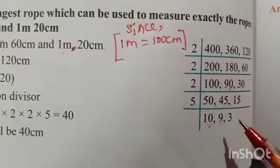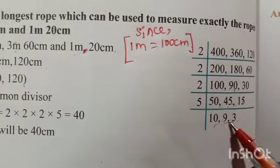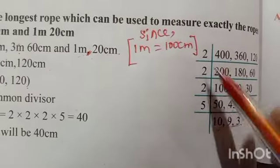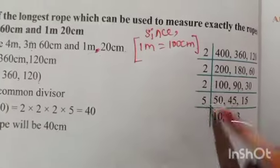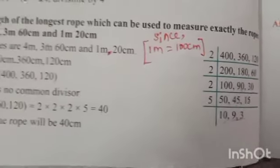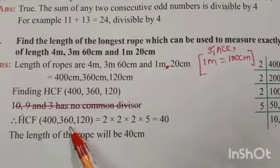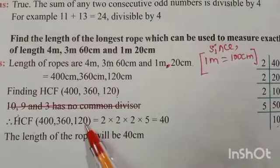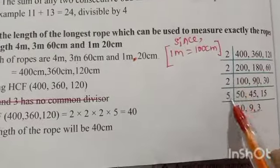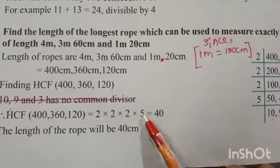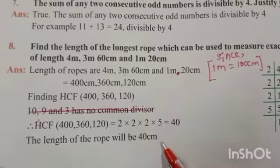Stop this process because these 3 numbers have no common factor. The HCF is 2 × 2 × 2 × 5. So HCF of 400, 360, and 120 equals 2×2×2×5 = 40. Therefore, the length of the longest rope will be 40 cm.